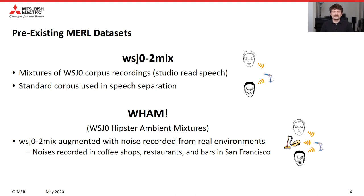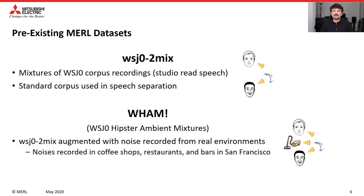Here are two pre-existing MERL datasets. The first is the Wall Street Journal mixture dataset — synthetic mixtures created using the Wall Street Journal corpus. This corpus has studio recordings of read speech, and the dataset has been a standard corpus used in speech separation, used in virtually all studies since it was released nearly five years ago. More recently, MERL released the WHAM dataset in collaboration with Whisper AI. This is the Wall Street Journal mixture dataset augmented with noise recorded from real environments — coffee shops, restaurants, and bars throughout San Francisco.